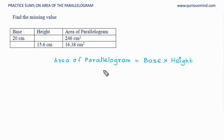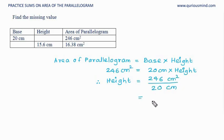Area is given as 246 cm square. Base is 20 cm, height we have to find. And therefore height is equal to—this 20 goes that side, becomes divided by—and that gives us 12.3 cm.